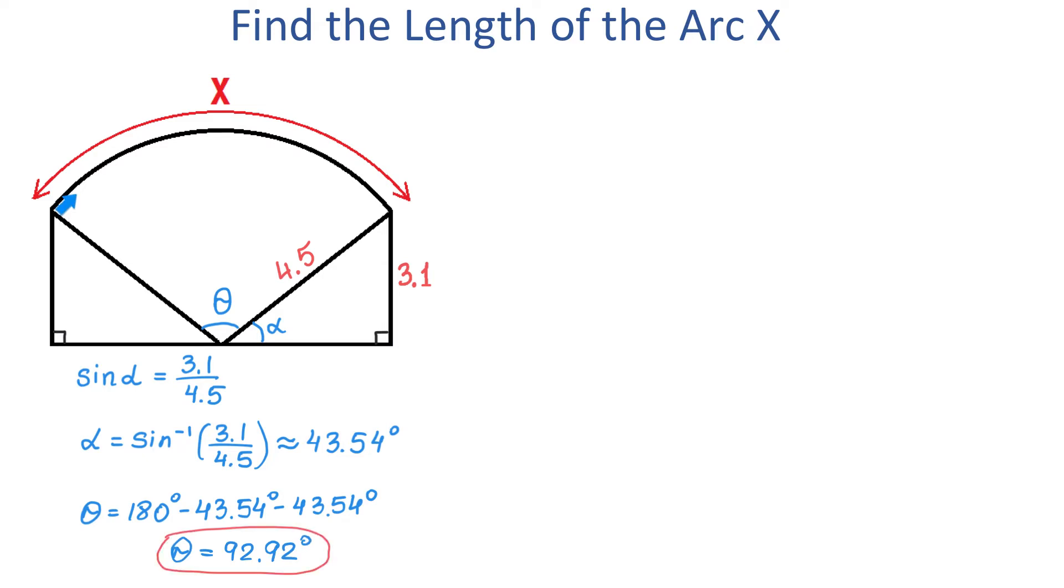And now, from here, to find the length of this arc, we can take two approaches. With the first approach, we will use the following formula. Arc length equals theta over 360 degrees multiplied by 2 pi r, and you may recognize 2 pi r as the formula for the circumference of a circle. So, if here we would have a complete circle, then 2 pi r would be the circumference of this circle. And by multiplying 2 pi r by theta over 360 degrees, we show that we take only a fraction of the circumference.